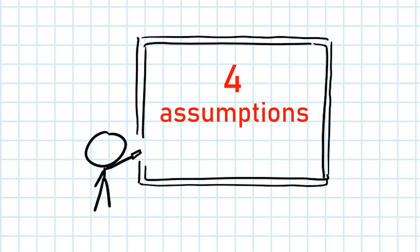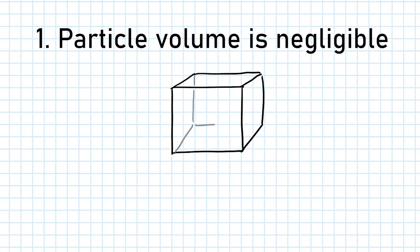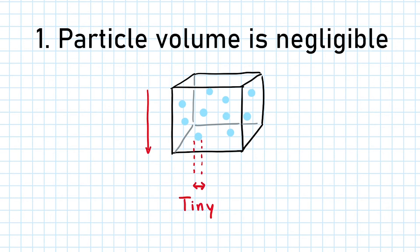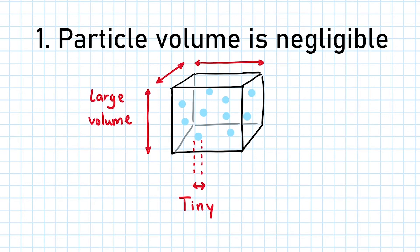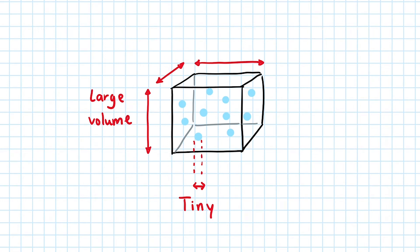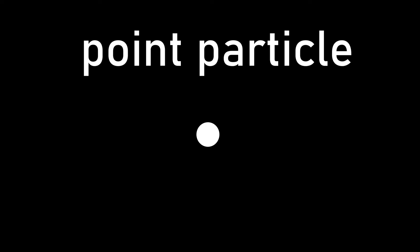There are four main assumptions that we need to make when considering a gas as ideal before it can obey the gas law. First, the total volume of the individual molecules is negligible compared to the volume that the gas occupies. This is so that we can consider each molecule as a point particle.